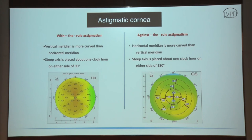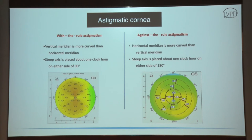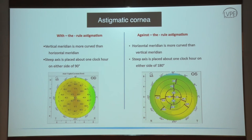What is with-the-rule astigmatism and against-the-rule astigmatism? When the vertical meridian is more curved than the horizontal, we call it with-the-rule astigmatism — the topography will show a symmetric bowtie in the vertical meridian. When you have a steep axis in the horizontal meridian, then it is against-the-rule astigmatism.